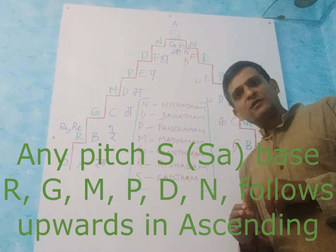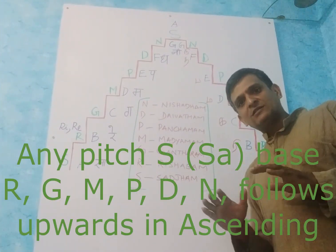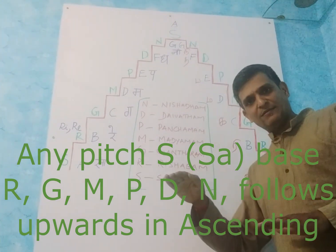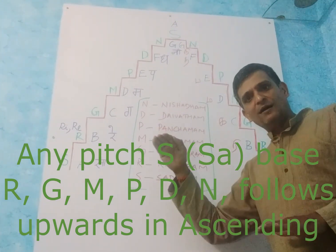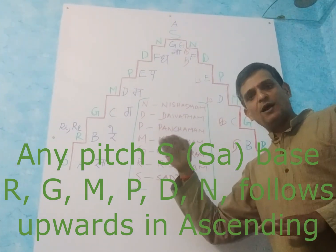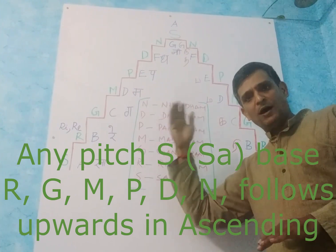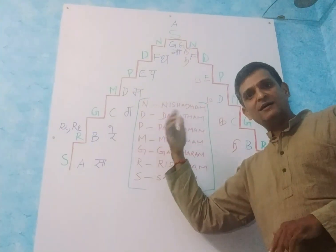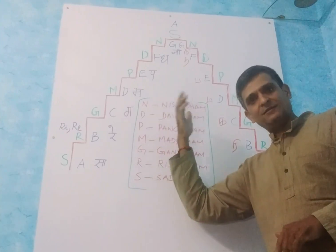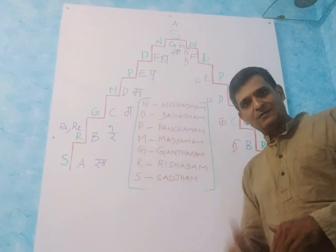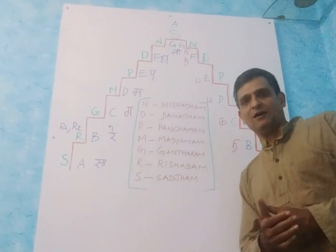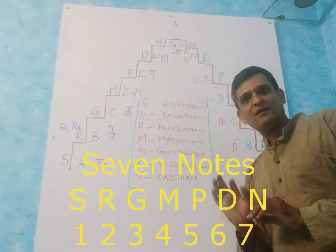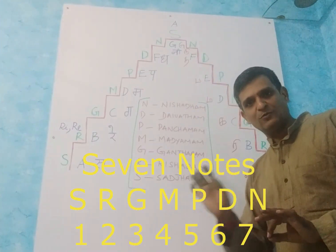In Indian music, in any pitch, Sa is the base note. Sa, then Ri or Re, then Ga, then Ma, then Pa, then Da, then Ni. Meaning the same note — the base note and the octave note — is Sa. We have to take one only out of this: the top note and the base note.